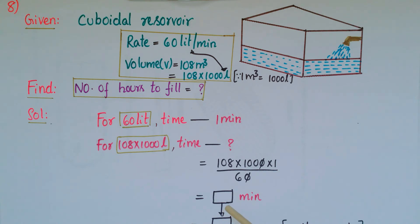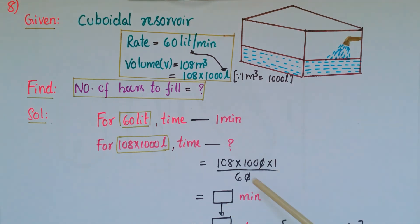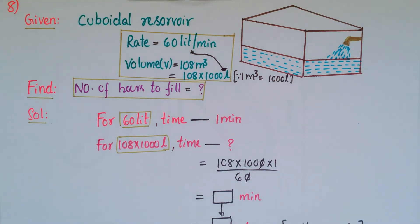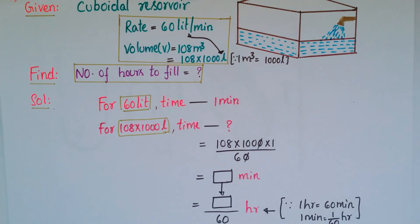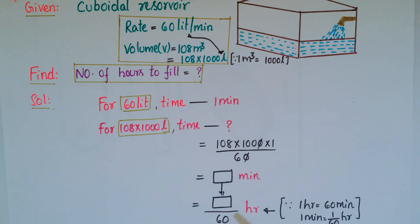The time in minutes is 108 into 1000 into 1 by 60, which gives the result in minutes. Then convert to hours: since 1 hour equals 60 minutes, 1 minute equals 1 by 60 hours. Divide the result by 60 to get the final value in hours.